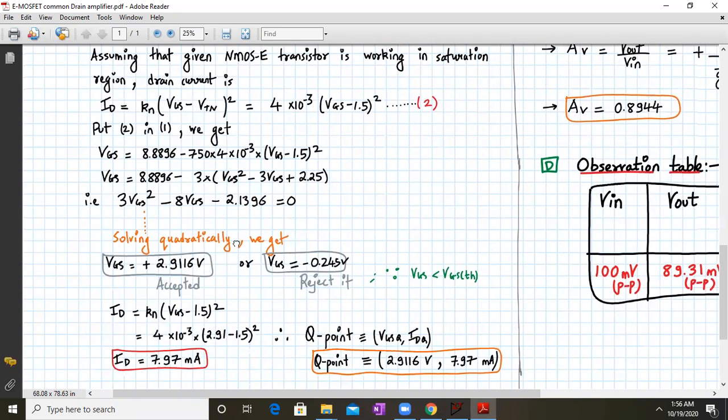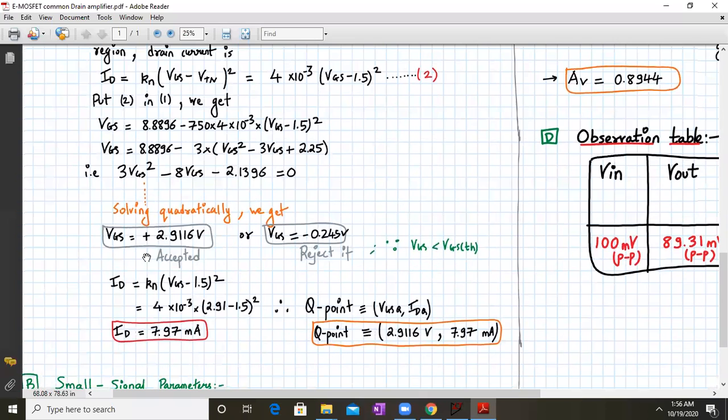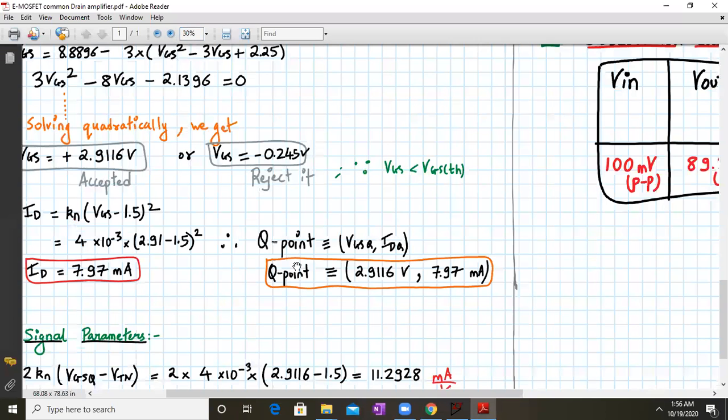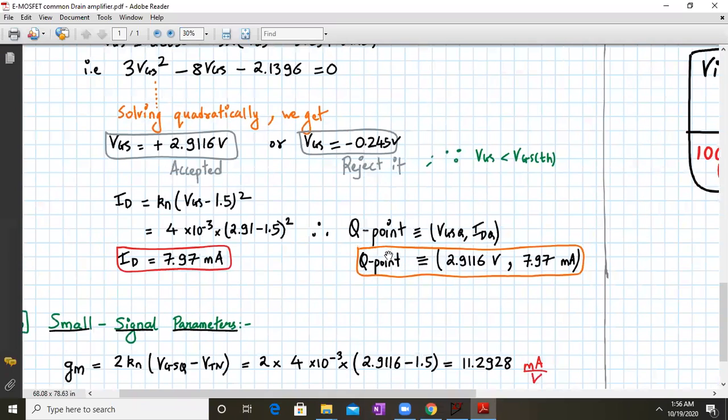Solving this quadratic equation in a calculator gives two values for Vgs. The positive value is 2.9116 volts, and the negative value is rejected since Vgs must be greater than the threshold voltage.